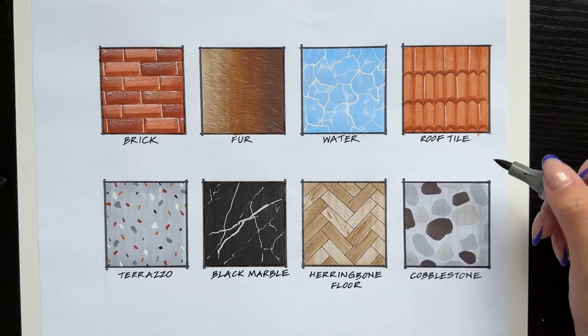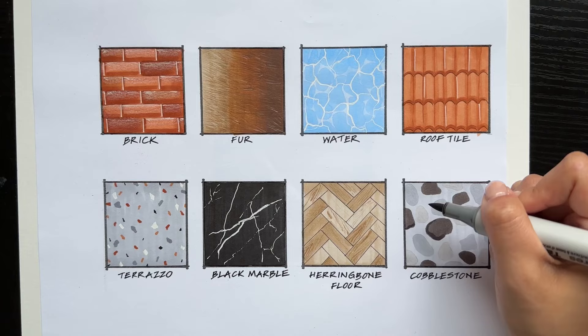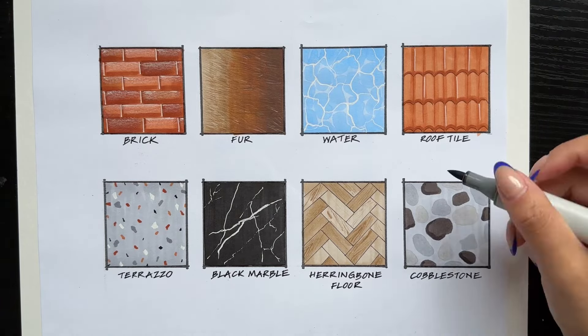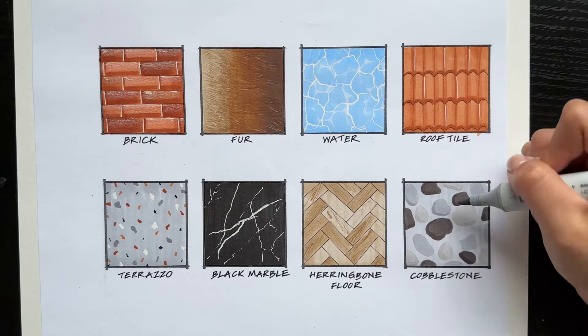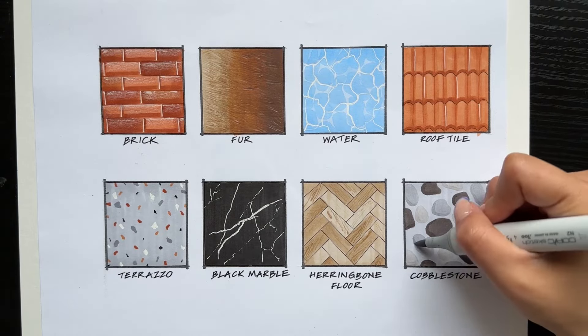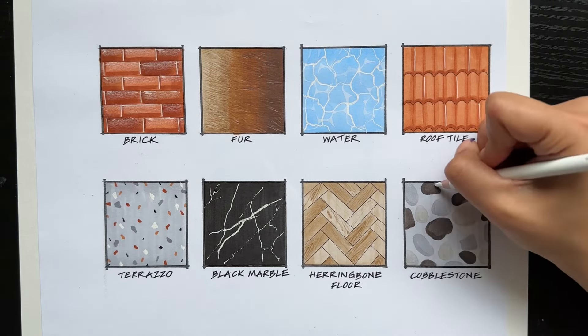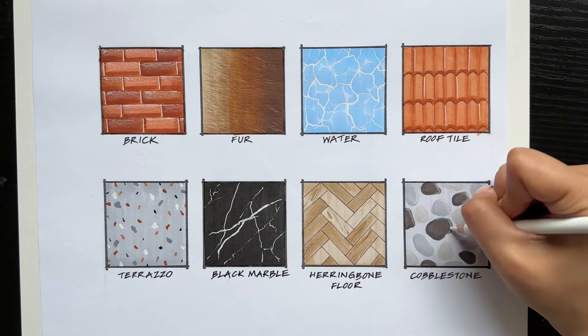And then I'm finishing it off with a dark gray. Use the same marker to create the shadow for each of the stones. I'm just assuming that the sunlight is coming from the right side, so I'm putting the shadows on the left. You can add a little bit of highlight using white pencil crayon.